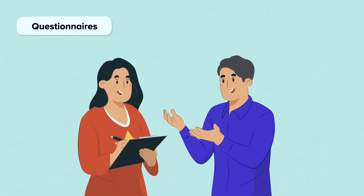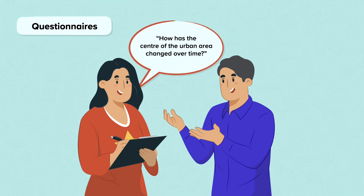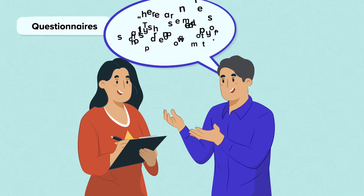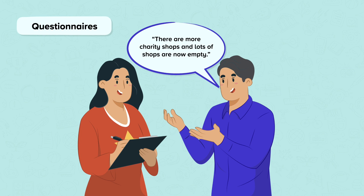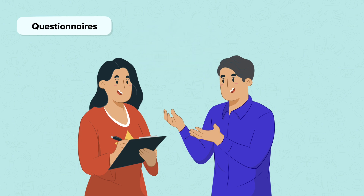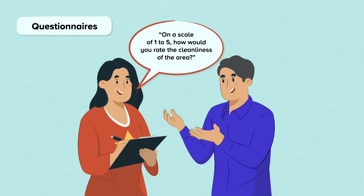A questionnaire is designed to find out the views of the public. They might collect a mixture of qualitative and quantitative data. By asking questions such as how has the centre of the urban area changed over time, a description of the urban area can be gained. By asking people to score features or to select from categories of answers, quantitative data can be generated.